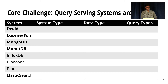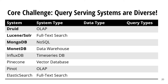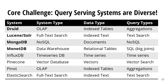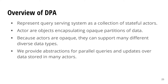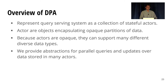The core challenge we faced in building DPA is that the query serving systems we're targeting are very diverse. We're targeting a wide range of systems from OLAP systems to text search systems to vector databases, and these all have their own custom data types and specialized query models. So it's not obvious that a single abstraction or programming model can cover all of these systems. To address this, we realized that we could represent a query serving system as a collection of stateful actors, where an actor is an object encapsulating an opaque partition of data. Because actors are opaque, they can support many different diverse data types, and we can provide abstractions for parallel queries and updates over data stored in many actors.